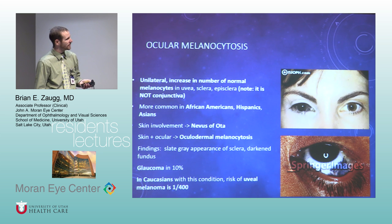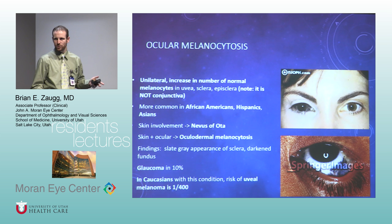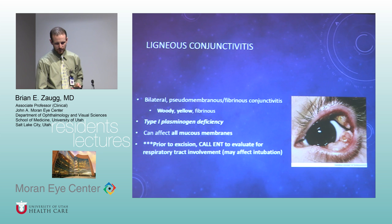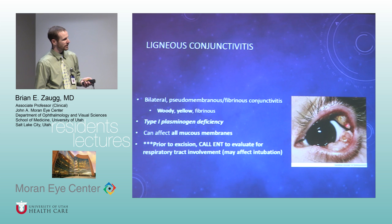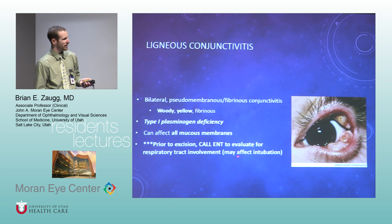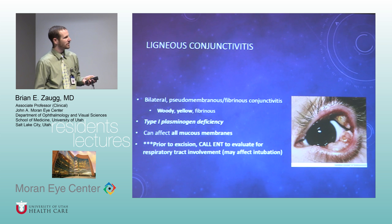Ocular melanocytosis: think about melanoma risk and glaucoma risk. Usually take photos and watch closely, get ultrasounds to look for choroidal nevi. Ligneous conjunctivitis is very tough — I've never seen one. It's a type 1 plasminogen deficiency. Before taking these patients to the OR, watch out because they can have respiratory tract involvement causing difficult anesthesia issues. They present as yellow, elevated, rough-looking lesions of the lids.